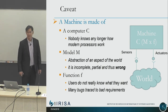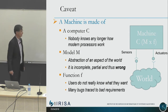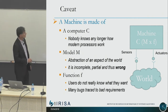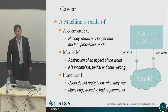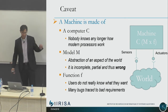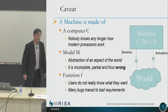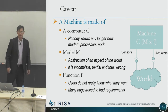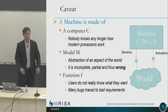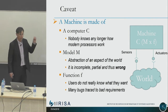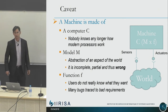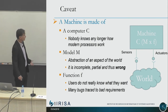There is a big caveat. A machine is made of a computer, a model, and a function. First, if you look at modern processors, nobody knows any longer what they are doing. For floating-point arithmetic it's already difficult, and regarding how much time a computation takes or how much power it consumes — it's completely non-deterministic. Second, the model, by definition, is an abstraction of an aspect of the world, meaning it is wrong — always wrong, incomplete, partial, and wrong.